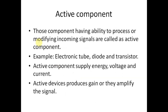Active components are those that have the ability to process or modify incoming signals. Examples of active components are electronic tubes, diodes, transistors, and FET. Active components supply energy, voltage, and current, produce gain, and amplify signals. For example, amplification is like a teacher using a microphone for 1000 students — the teacher's soft voice is converted into louder sound using the mic. This process is called amplification.